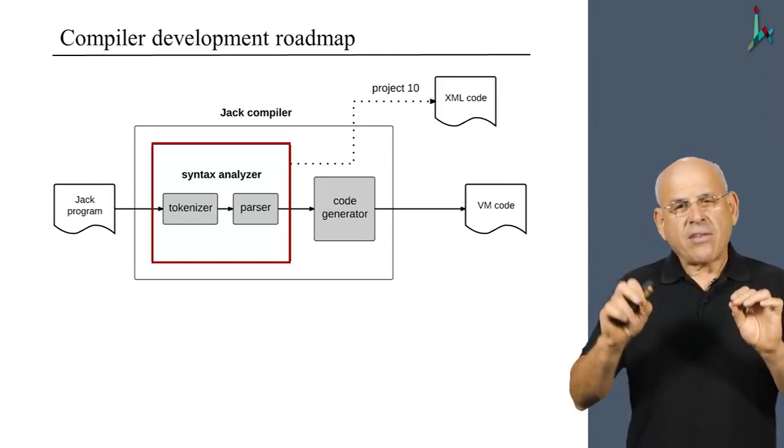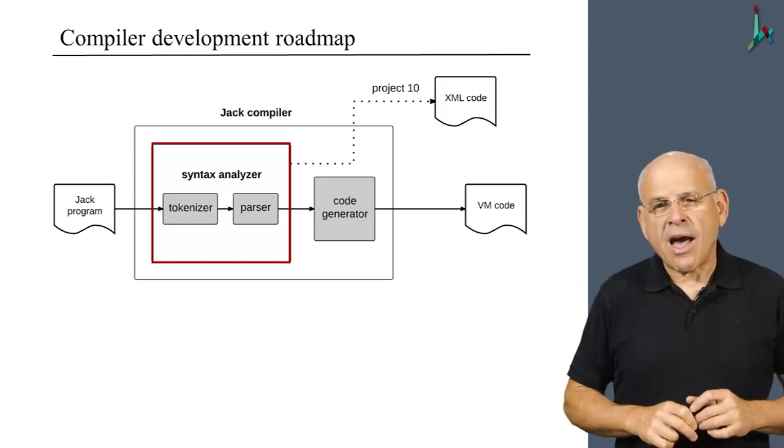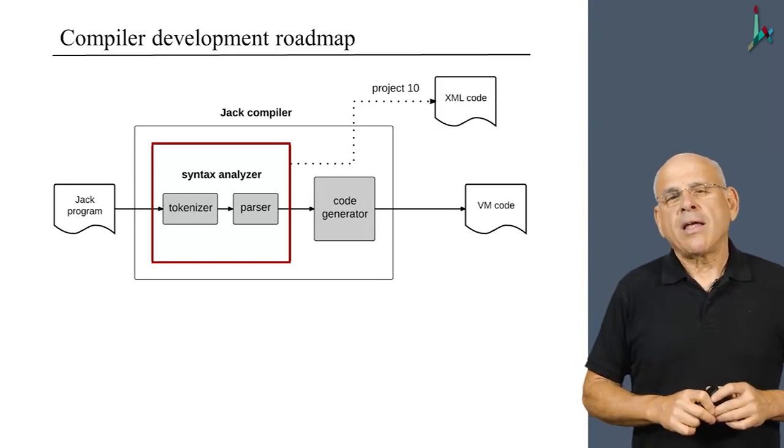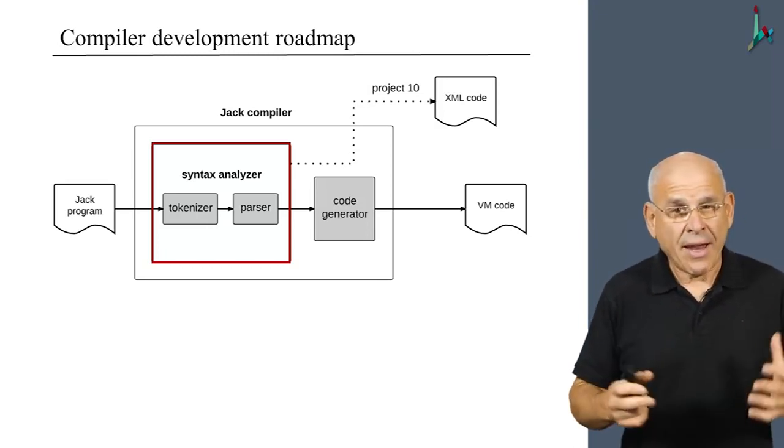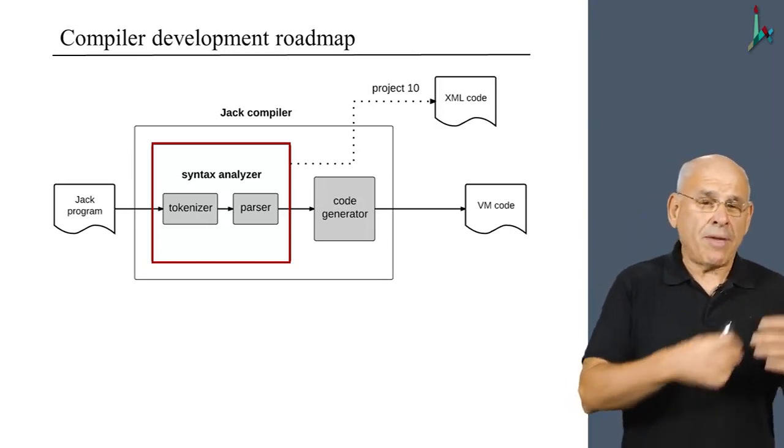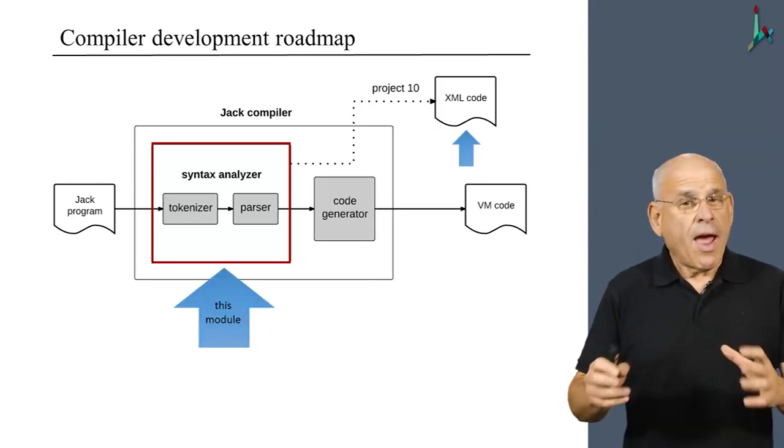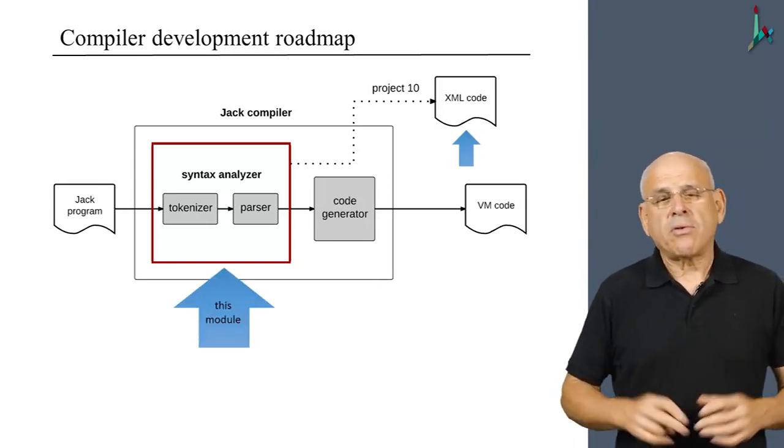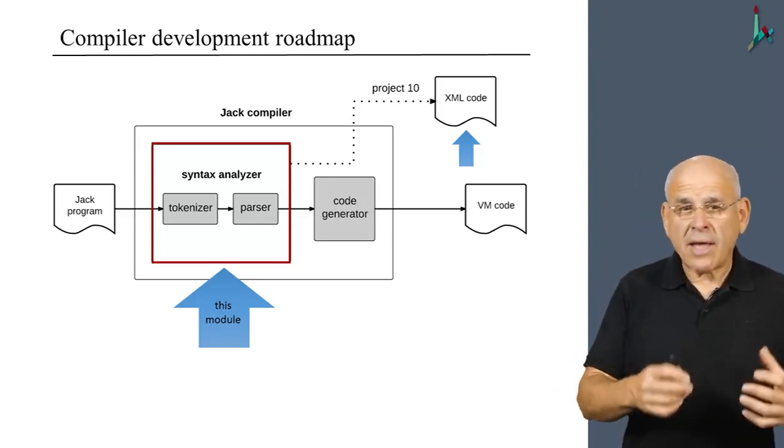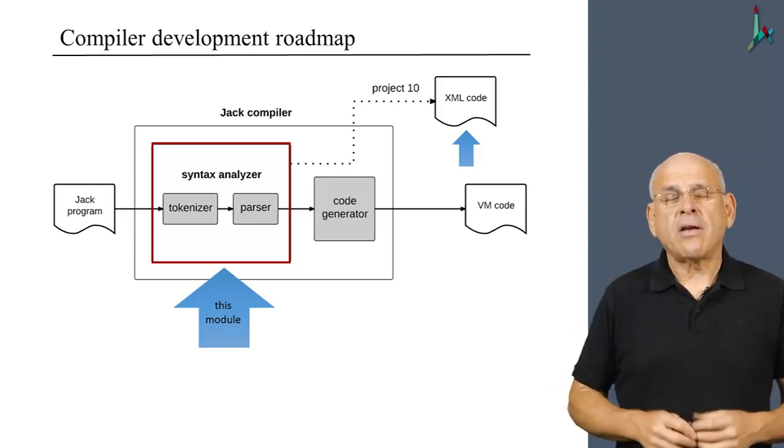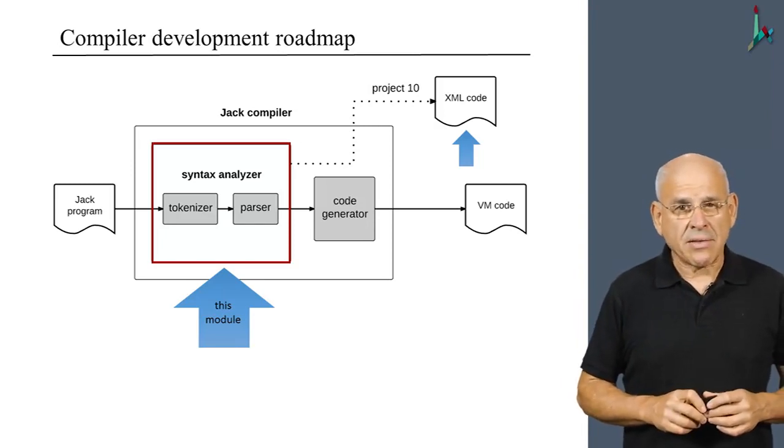And is doing what is necessary in order to create the code or generate the code in the next project. So the act of generating this output file, the XML file, will be done in project 10, which will be described in the last unit of this module. So for now, what we have to do in this module is develop the tokenizer and the parser, which together make up the syntax analyzer.